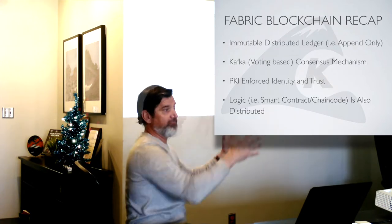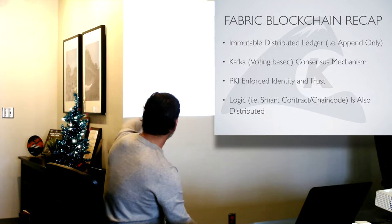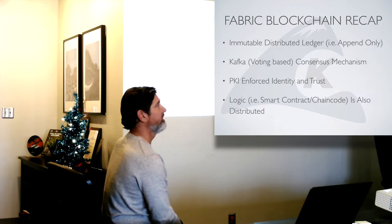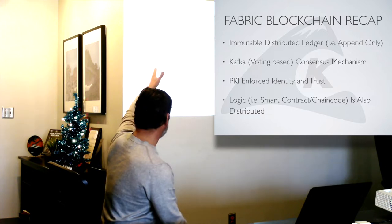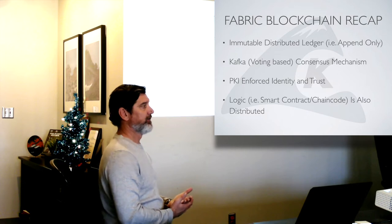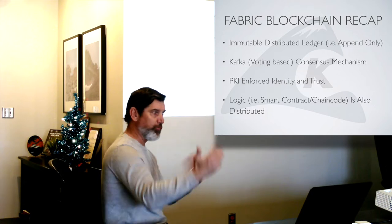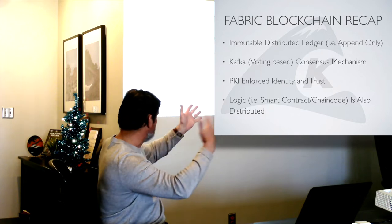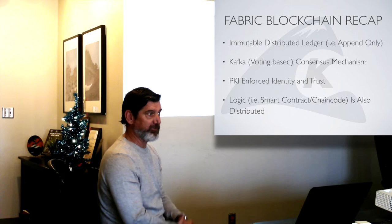Fabric blockchain recap: it's a beautiful distributive append-only ledger. The consensus out of the box is Kafka — it's voting-based. It's Byzantine fault-tolerant, but it's not Byzantine consensus — it's not a consensus mechanism. PKI-enforced identity and trust: Fabric is permissioned, meaning everybody's got to have an identity. You have a certificate to access it. It's not an open, public type of blockchain. The logic — smart contract and chain code are one and the same. Smart contract chain code is what Fabric calls distributed logic. The Fabric blockchain is not single-purpose debit/credit cryptocurrency — it's whatever data you want to store, with whatever application logic or business logic you want applied.